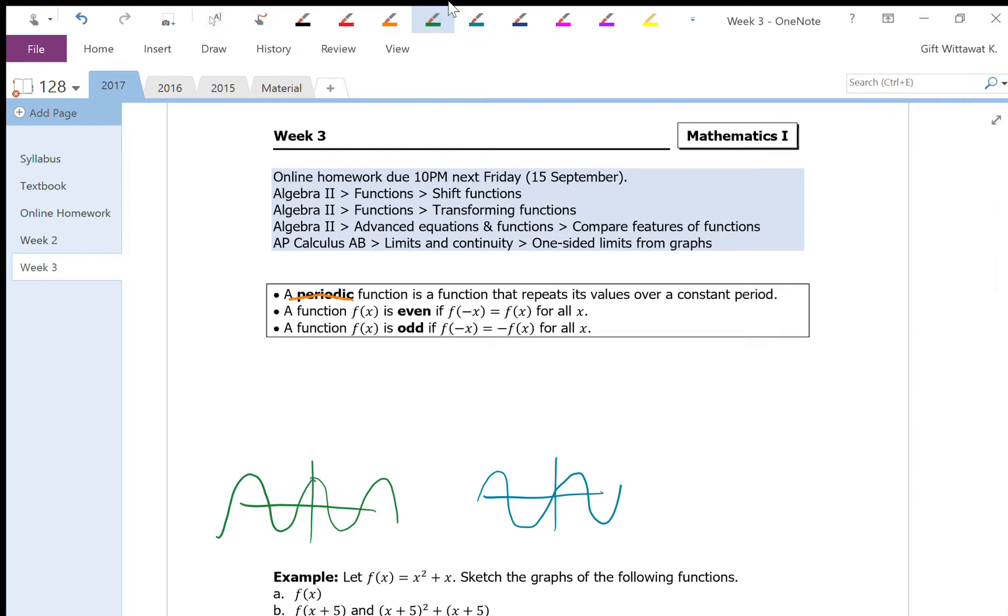Another one is called an even function. A function is even when f of negative x is equal to f of x for all x. A classical example of an even function is x squared, and that's pretty easy to see why.